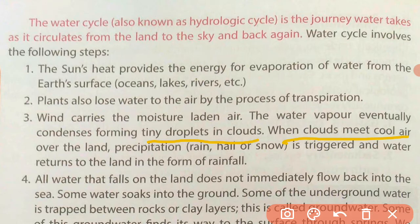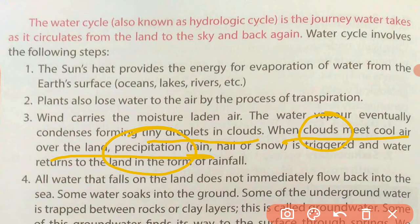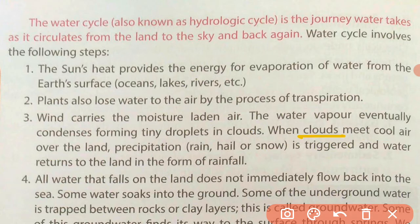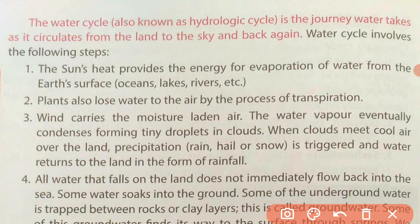When clouds meet cool air over the land, precipitation occurs. When clouds become cooler, via condensation the water vapor converts into tiny droplets, and those droplets fall as rainfall — which is precipitation. If the temperature is very low, the water vapor can also convert into hail or snow. But if the temperature is moderate, the water vapor in the cloud converts to liquid water and it rains. So the water comes back onto the land in the form of rain, hail, or snow.